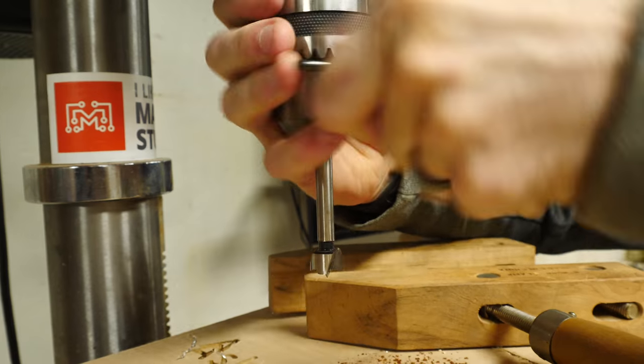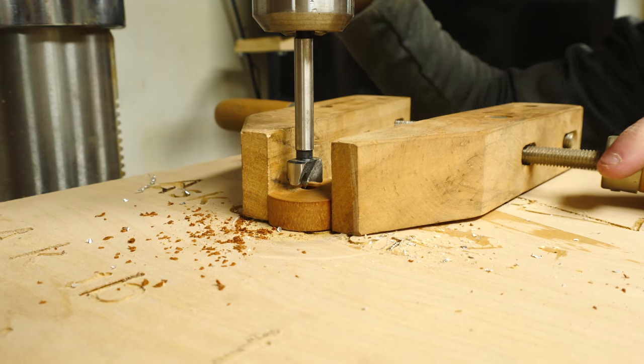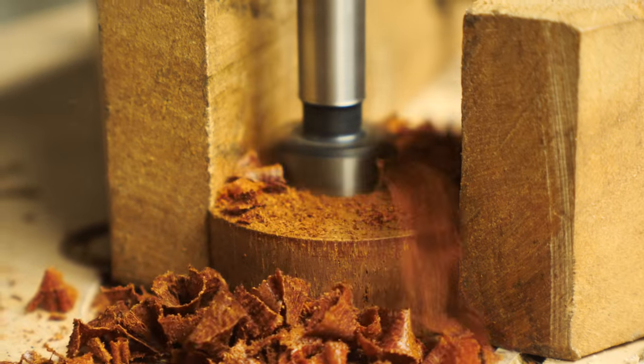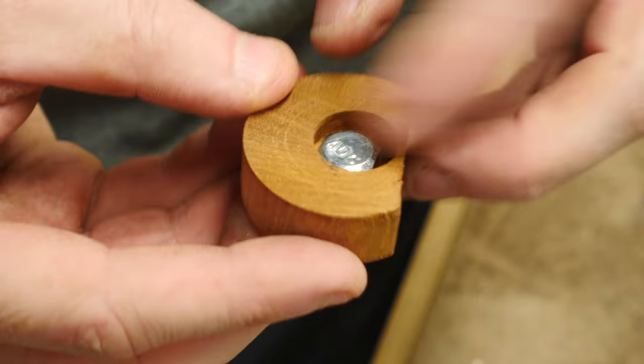I drilled one hole all the way through that would fit the quarter-twenty bolt, then used a Forstner bit to countersink around that hole. This lets the hex head of the bolt fit right in and not stick out the bottom.